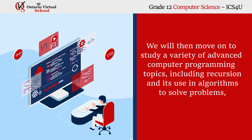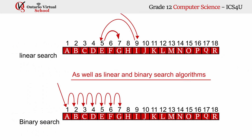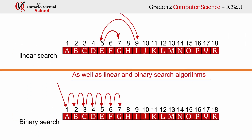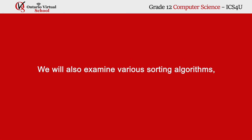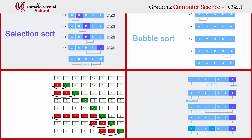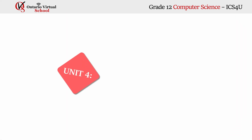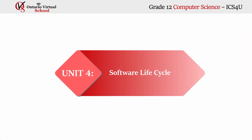We will then move on to study a variety of advanced computer programming topics, including recursion and its use in algorithms to solve problems, as well as linear and binary search algorithms. We will also examine various sorting algorithms including selection sort, bubble sort, insertion sort, and quick sort. Finally, you will learn how to use XML text files to store and share information with applications.